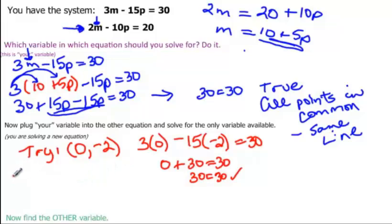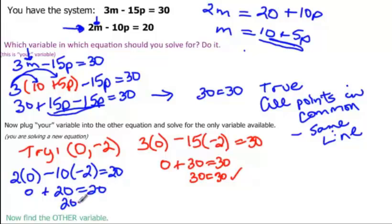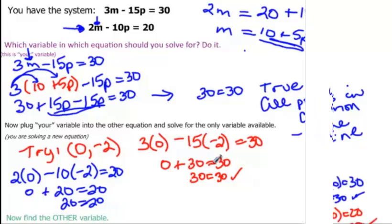And just to make sure that you really know this is true, let's try it in the bottom equation. So 2 times m, which is 0, minus 10 times p, which we said is negative 2, should be equal to 20. 2 times 0 is 0, negative 10 times negative 2 is positive 20, equal to 20. So sure enough, it works for both those equations.